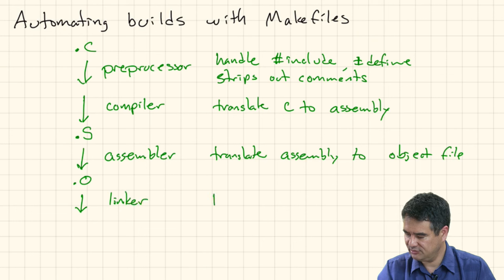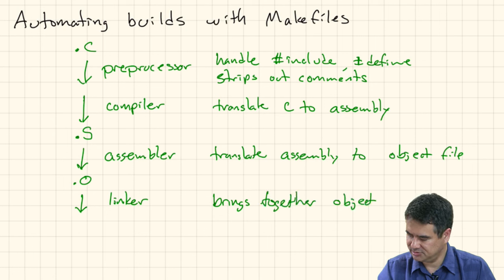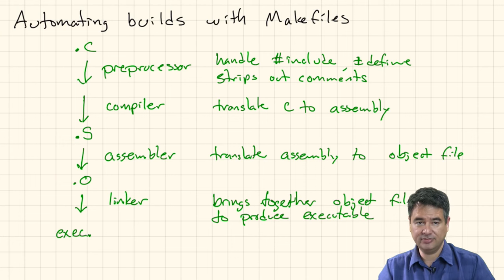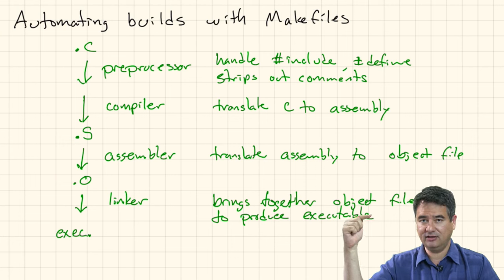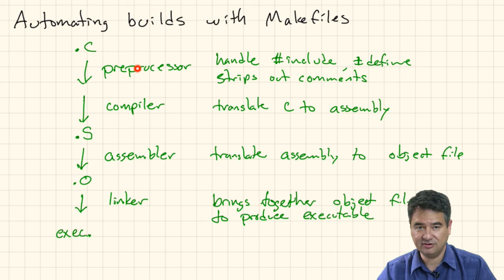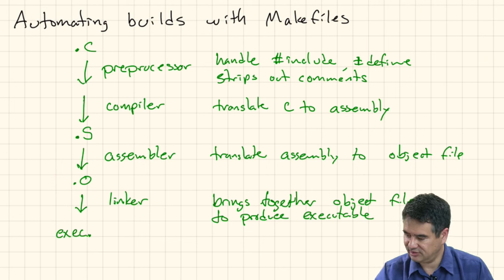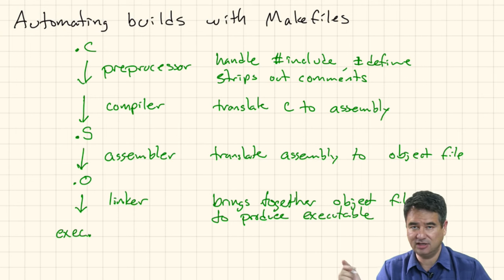From there it goes through something called the linker, which brings together object files and produces an executable. So your C file starts as a raw C file, goes through the preprocessor, then the compiler, the assembler, the linker, and finally you get an executable. Incidentally, each one of these steps can be invoked with a specific option to the compiler — and it doesn't matter whether you use Clang or GCC, it's the same options for both.